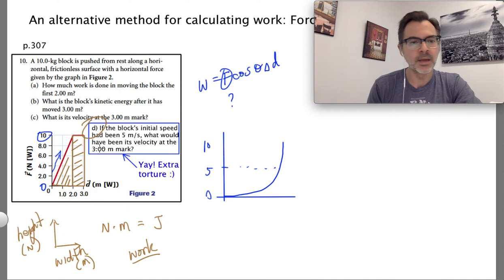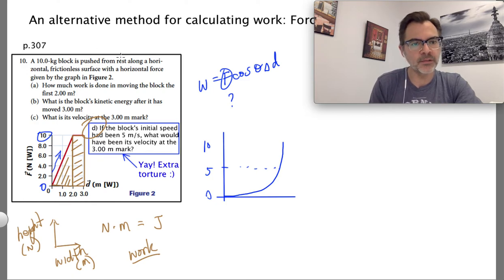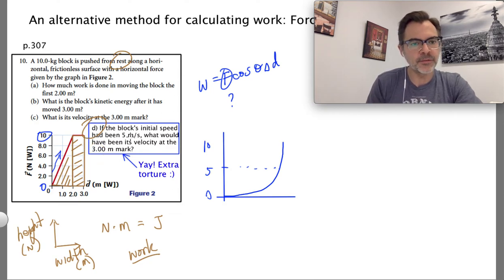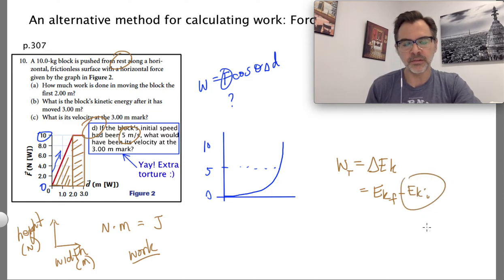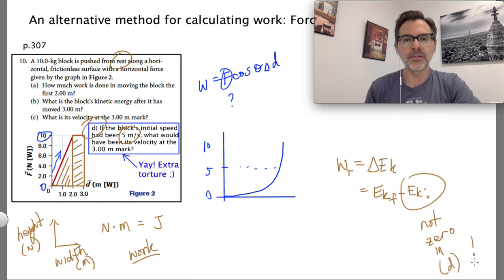I also added an extra question, part D, which is not in the textbook. It asks: what would be the final speed of this moving object if, instead of starting from rest as the book says, you started at 5 meters per second? Now the idea that total work equals delta EK — EK final minus EK initial — means the initial kinetic energy is not zero in part D. Make sure you pay attention to that in order to get the right answer.